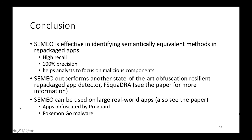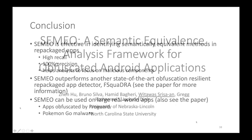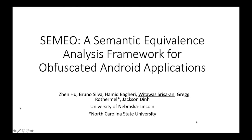In conclusion, Semino is effective in identifying semantically equivalent methods in repackaged apps. It produces high recall. It also has high precision. In our experiment, we were able to achieve 100% precision in every app. It helps analysts to focus on malicious components instead of spending time to track them down. Semino outperforms another state-of-the-art obfuscation resilient repackaged app detector called fSquadra. Semino can also be used on large real-world apps. In our paper, we have shown that we can use Semino to detect semantically equivalent method in apps that has been obfuscated by ProGuard, a commonly used obfuscation tool in Android environment. We also have used Semino to identify the code location where Pokemon Go was repackaged into malware. I'm now ready to take any questions. Again, thank you for being here.